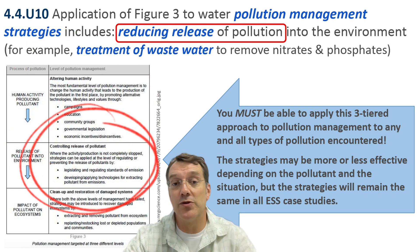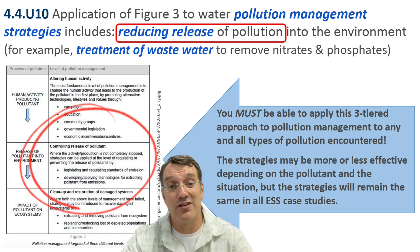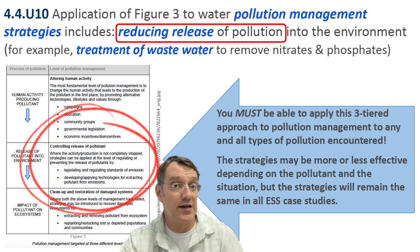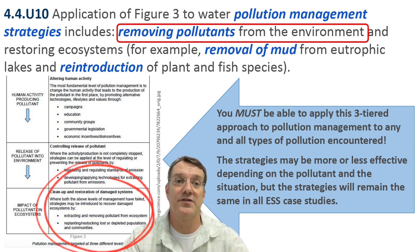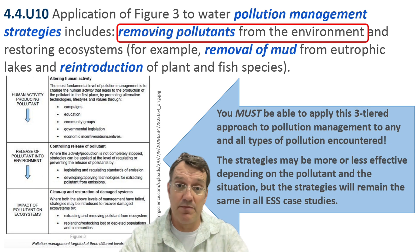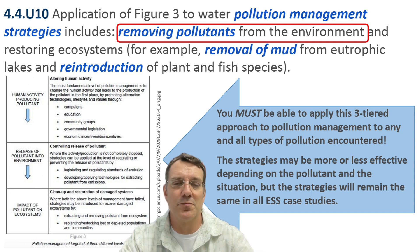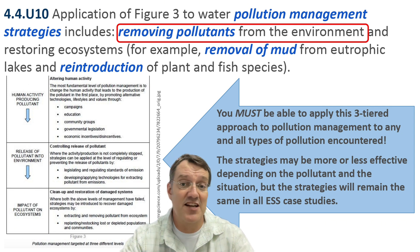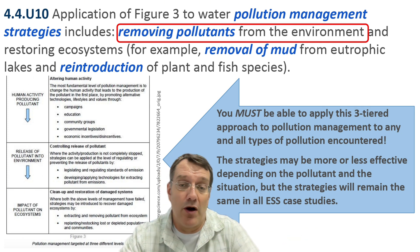The second tier involves controlling pollutant release through treatment and regulation. Tier two strategies don't prevent the creation of the pollutant — they just slow or stop its release into the environment. This reduces, but doesn't eliminate, the negative impacts on the ecosystem. The final tier encompasses the cleanup and restoration of damaged ecosystems. These tier three strategies aren't particularly effective because they don't address the root cause of the pollution at all. If the source of the pollutant doesn't change, the cleaned and restored ecosystem just gets polluted again, making tier three strategies both expensive and ineffective.